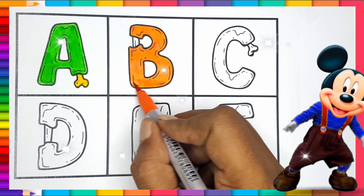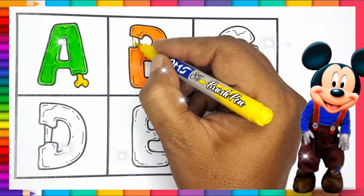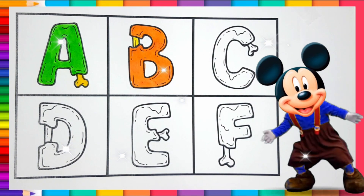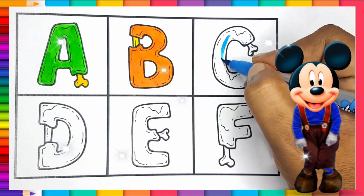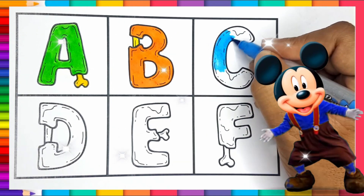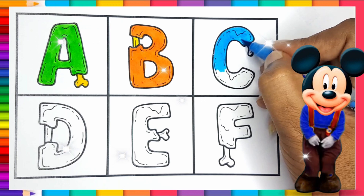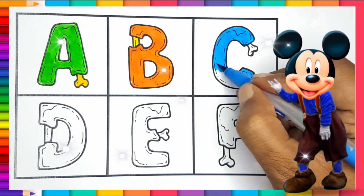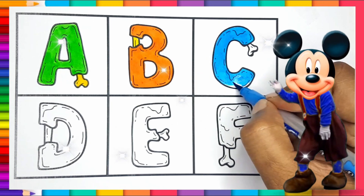A, B, C, D, E, F, G, H, I, J, K, L, M, N, O, P, Q, R, S, T, U, V, W, X, Y, and Z. Now I know my ABCs, next time won't you sing with me.